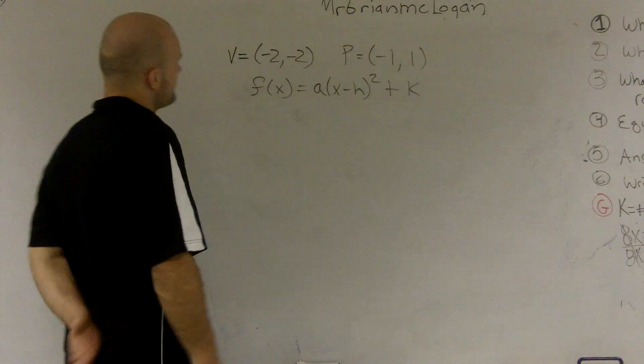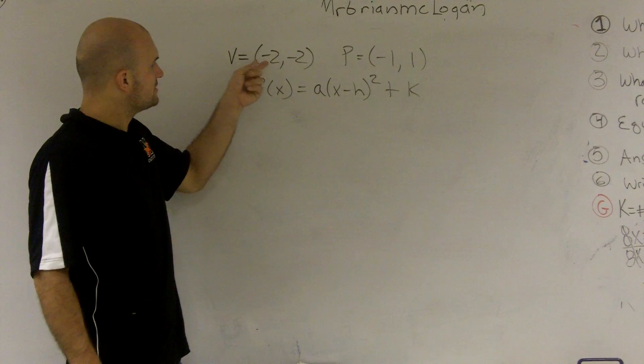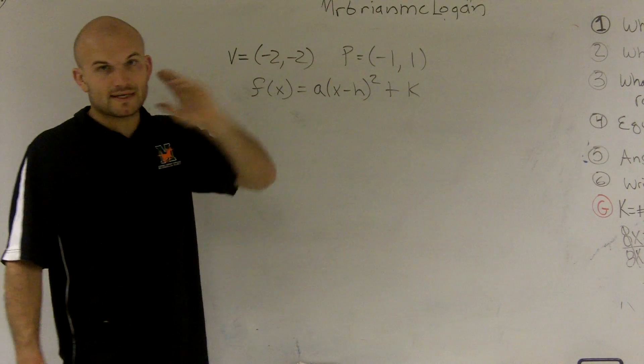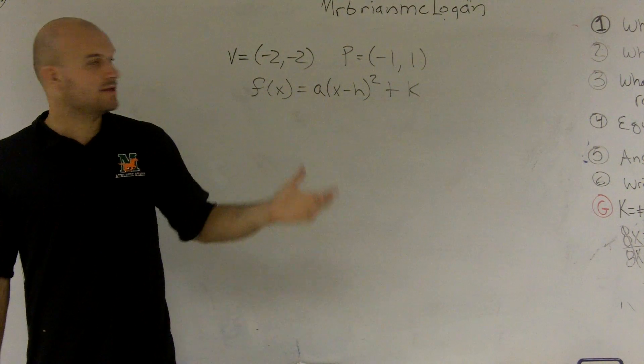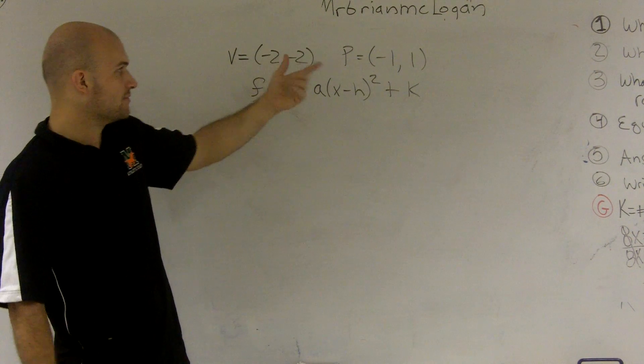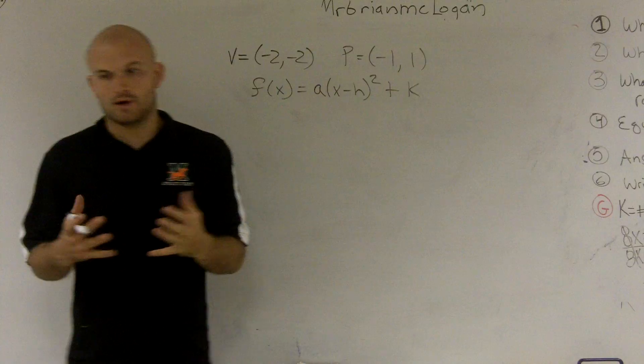Alright, what we have here is the vertex negative 2, negative 2, and we have the point negative 1, 1. And what they're asking us to do is find the polynomial that has a vertex of negative 2, negative 2, and goes through the point negative 1, 1.